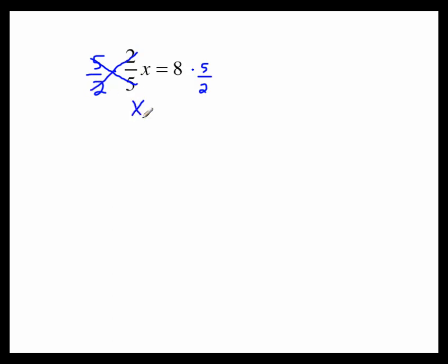We're left with the x all by itself. Now you may want to think about this as 8 over 1. And when you multiply these fractions, you have two choices. You can just multiply the tops. 8 times 5 is 40. 2 times 1 is 2. And then divide out and get 20.